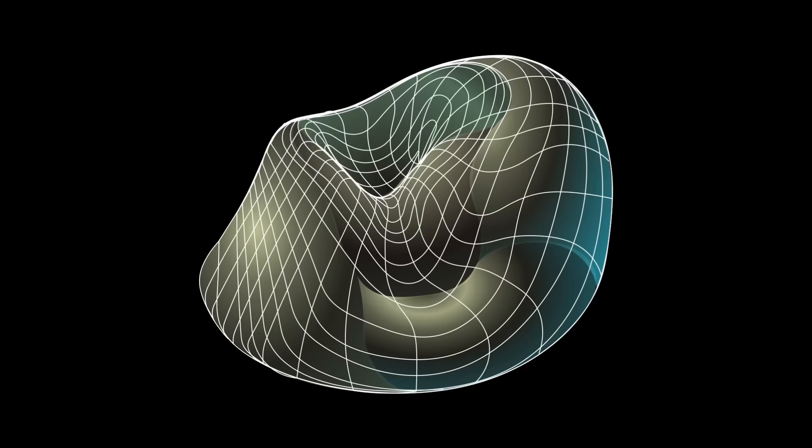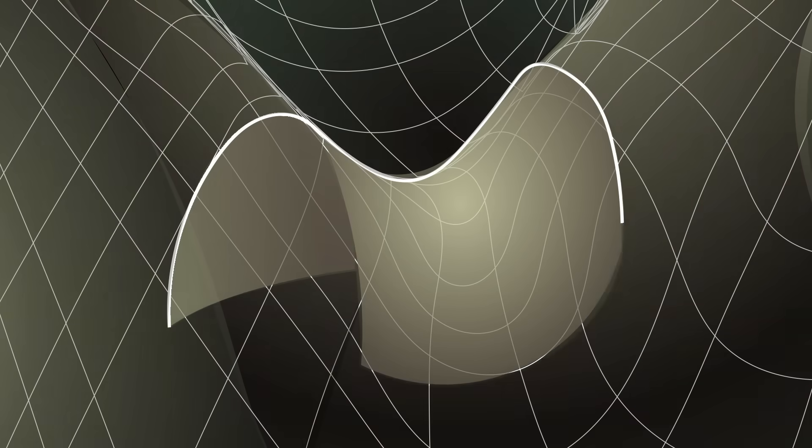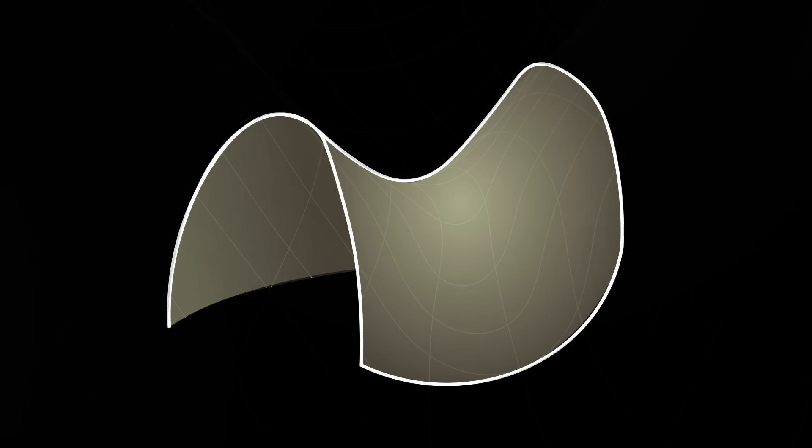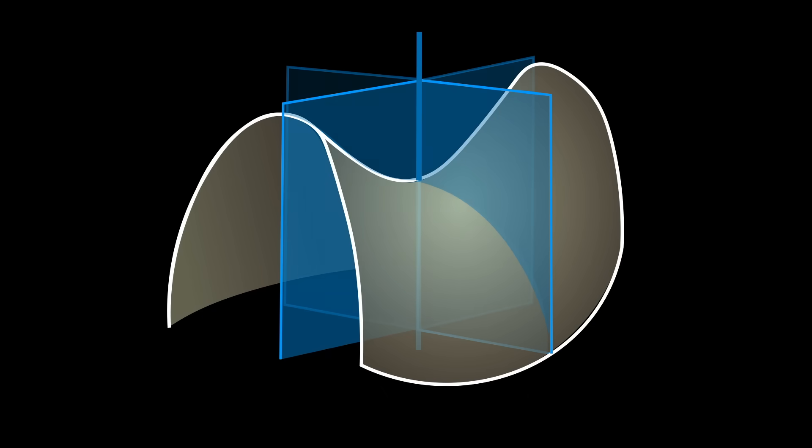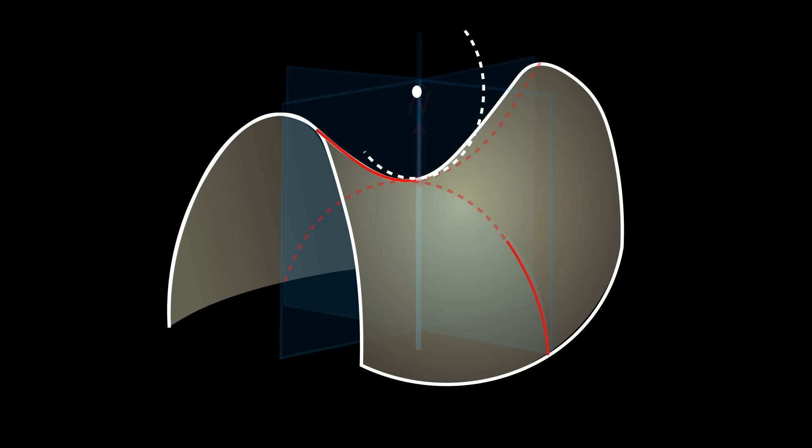Going back now to the principal curvatures kappa 1 and kappa 2 of the Gaussian curvature formula. Let's connect them to the visual concept of osculating circles. You can cut the surface at any point with vertical planes that contain the normal vector to the surface at that point. Each slice creates a normal curve line in that plane. Each of these curves has an osculating circle that encodes the local curvature at that point.